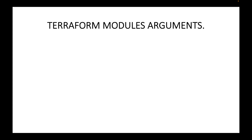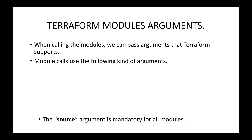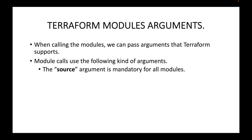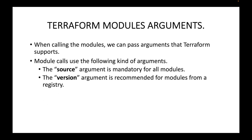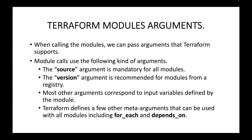In this session we will look at the Terraform module arguments. When you are defining the module block, Terraform accepts certain types of arguments that we can pass to create the module block. Modules can use the following kinds of arguments: the source argument, which is mandatory for all modules; the version argument, which is recommended for modules from a registry; input variables defined by the module; and meta-arguments such as for_each and depends_on.